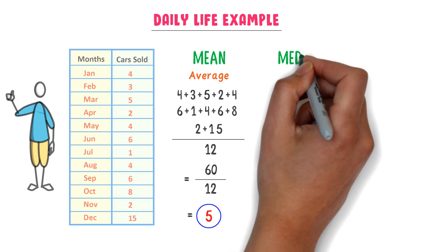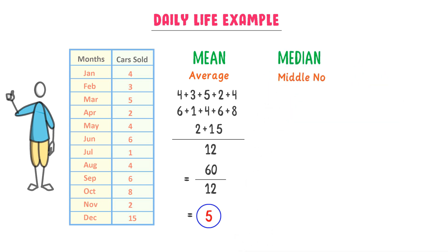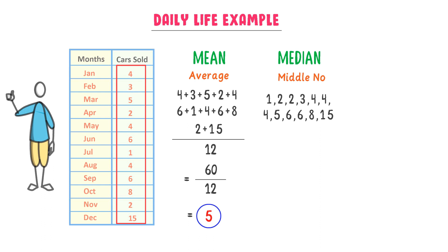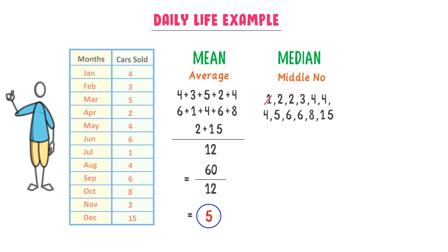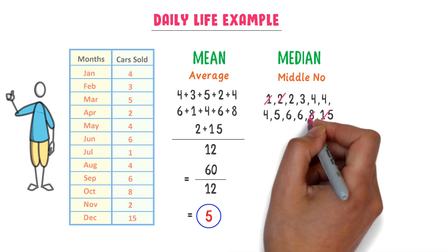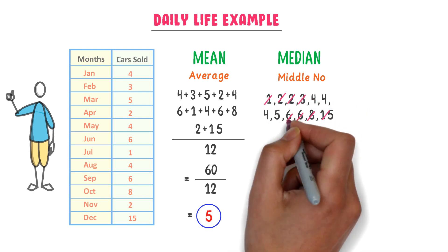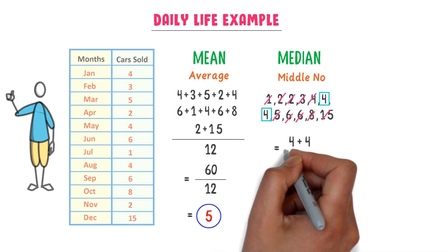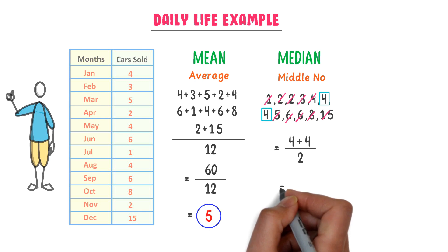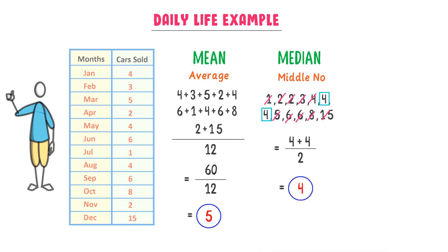Secondly, we know that median is the middle number. So I arrange all these numbers in ascending order. I cut one number from the left side and from the right side, then repeat this process until two numbers are left. I find the mean of these two numbers: 4 plus 4 divided by 2 is equal to 4. So the median of this data set is 4, which means that Mr. Tom sometimes sold more than 4 cars and sometimes he sold less than 4 cars.